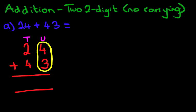4 plus 3. So the units column. What is 4 plus 3? Well, that equals 7. So we can write down 7 over here.